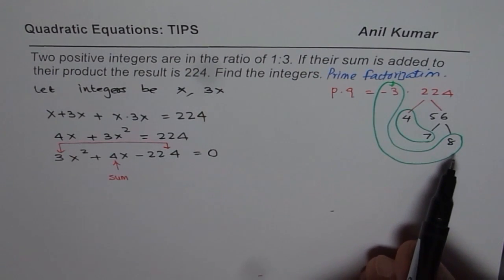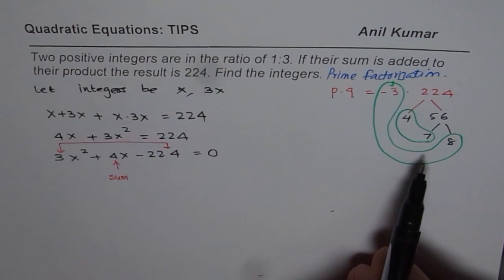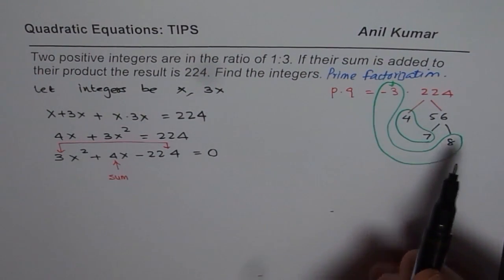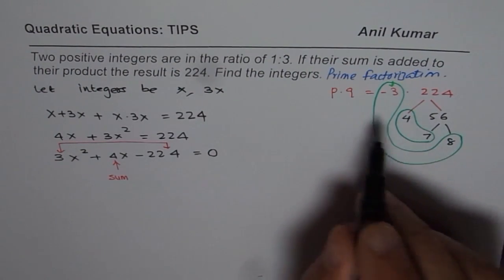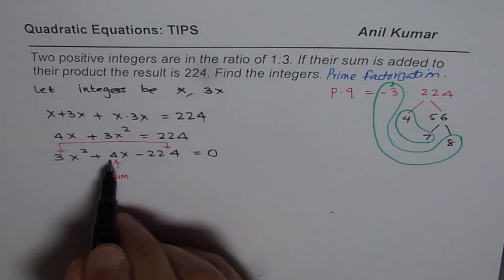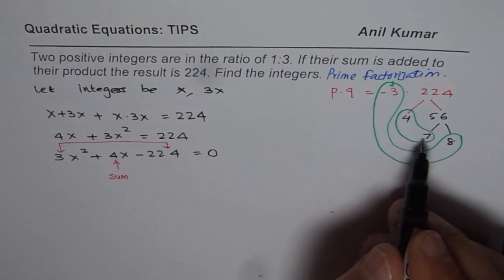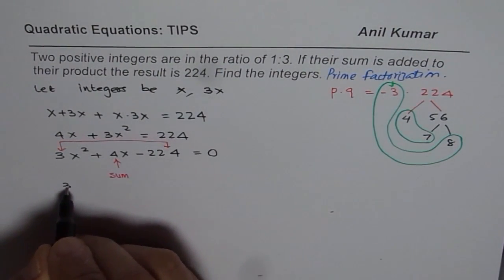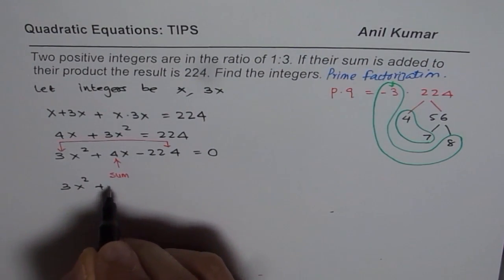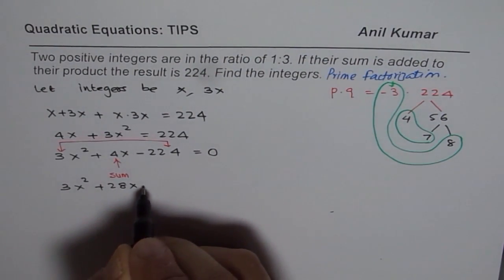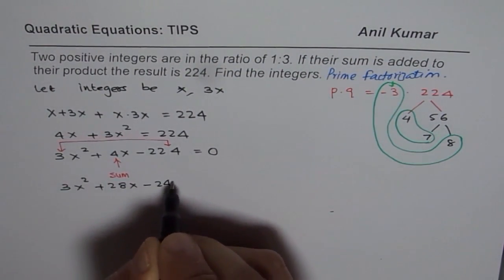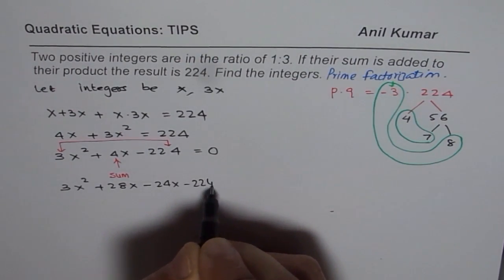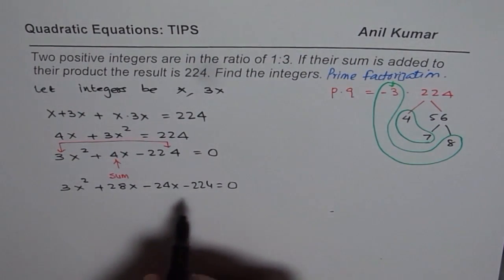So prime factorization indeed is a very effective technique. So the two numbers which we found are, we need plus of 4. So higher number should be positive, 28. So we can now write this as 3x squared plus 28x minus 24x minus 224 equals to 0.